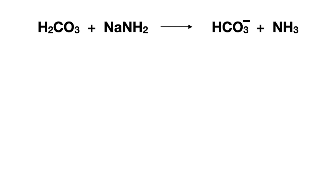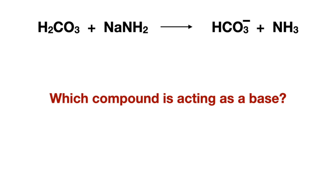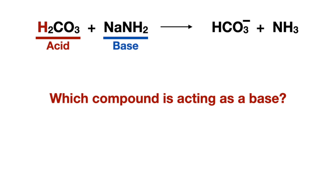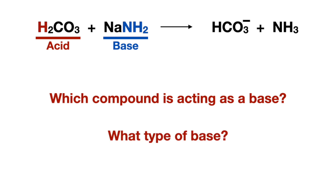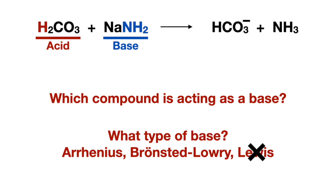Let's look at another example. The question is which compound is acting as a base — again, acting as means it has to come from the reactants. Just like in the previous example, it was easy to identify the acid, making the other reactant the base. Or, since alkali and alkali earth metals are hugely soluble and always break off as positively charged ions, break the sodium off to leave behind a negatively charged nitrogen, making it the base, and therefore the other reactant is the acid. When asked what type of base — the acid is a proton donor, so it can't be a Lewis base. And there is no hydroxide in the reaction, so it can't be Arrhenius, which leaves us with a Bronsted-Lowry base.